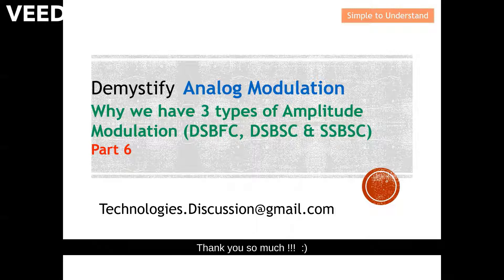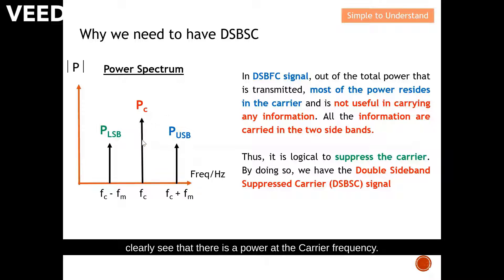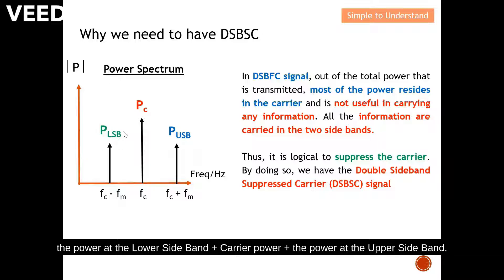Firstly, let's understand why we need Double Sideband Suppressed Carrier. This diagram shows the Double Sideband Full Carrier, where you can clearly see there is power at the carrier frequency. For DSB-FC, the total power equals the power at the lower sideband, plus the carrier power, plus the power at the upper sideband — these three components contribute to the total power.